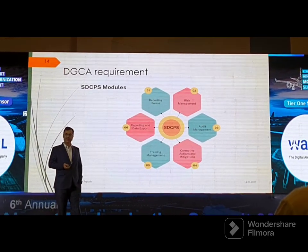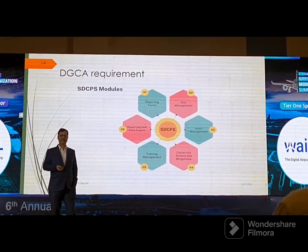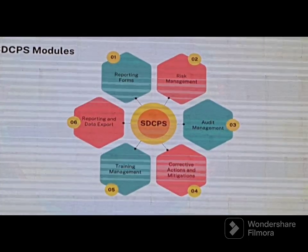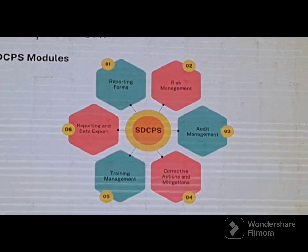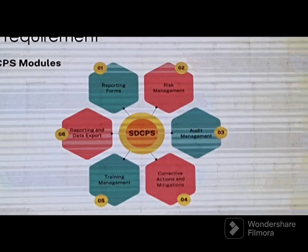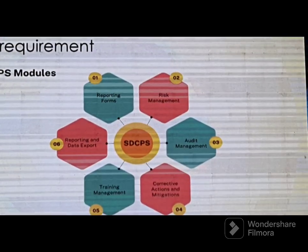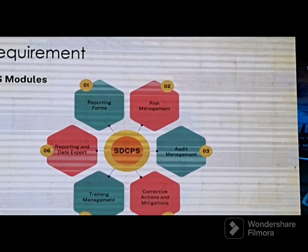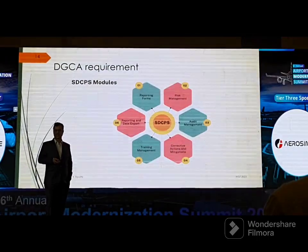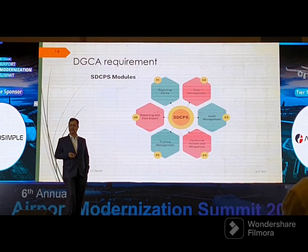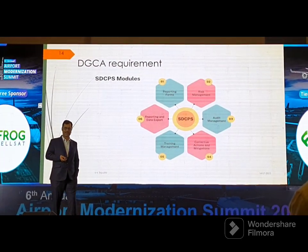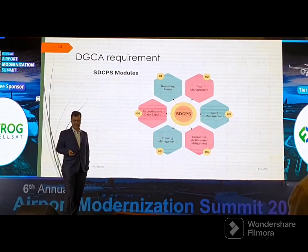Since aviation is a global phenomenon, data must be exchangeable across countries. If India has some data and Australia has some data, the reporting format must allow exchange. ICAO has therefore defined a standard data exchange format so that global reporting and global data exchange is possible, and global decisions can be made based on data priorities.